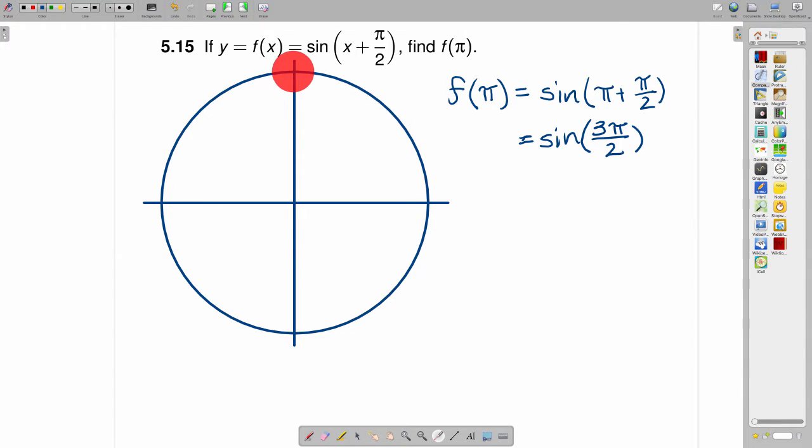we go pi over 2, 2 pi over 2, 3 pi over 2, and 3 pi over 2 is right here.